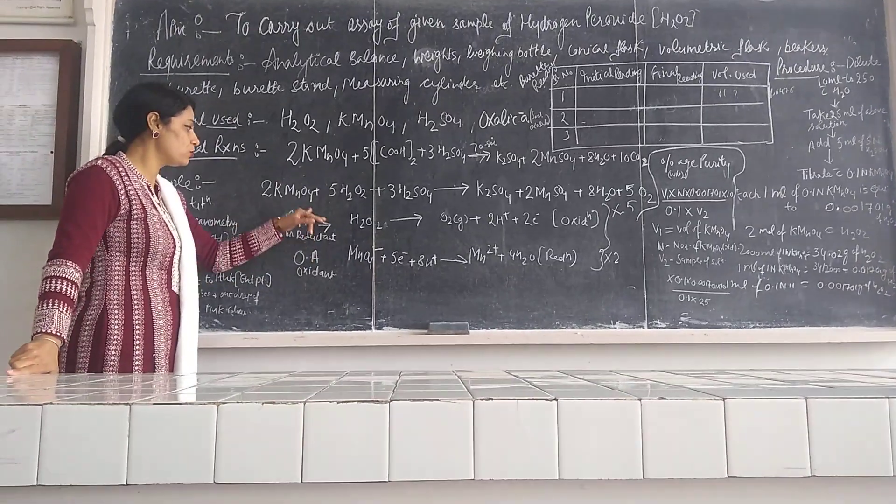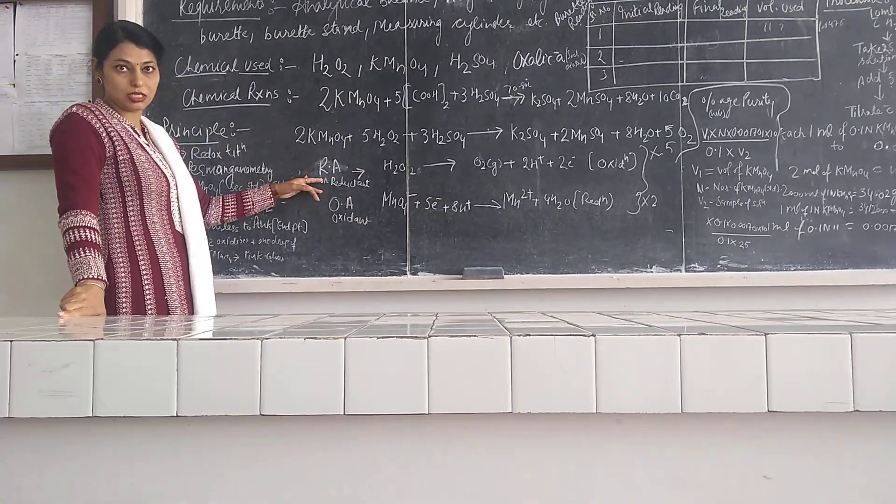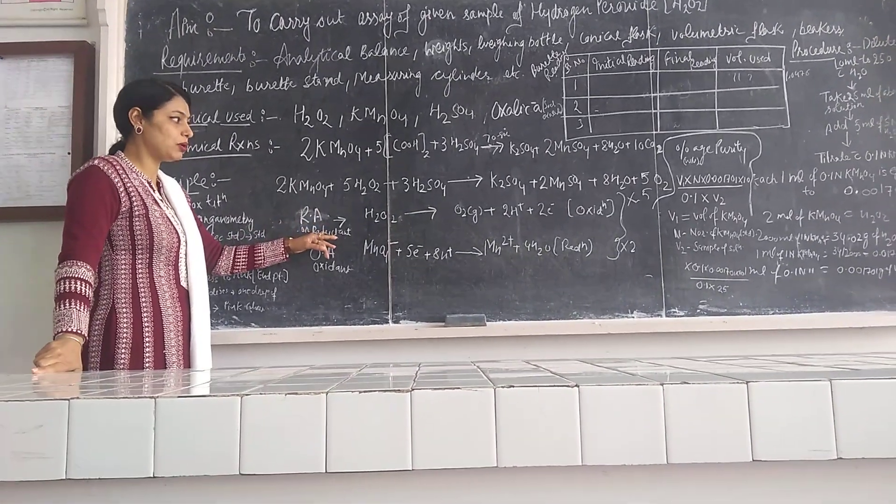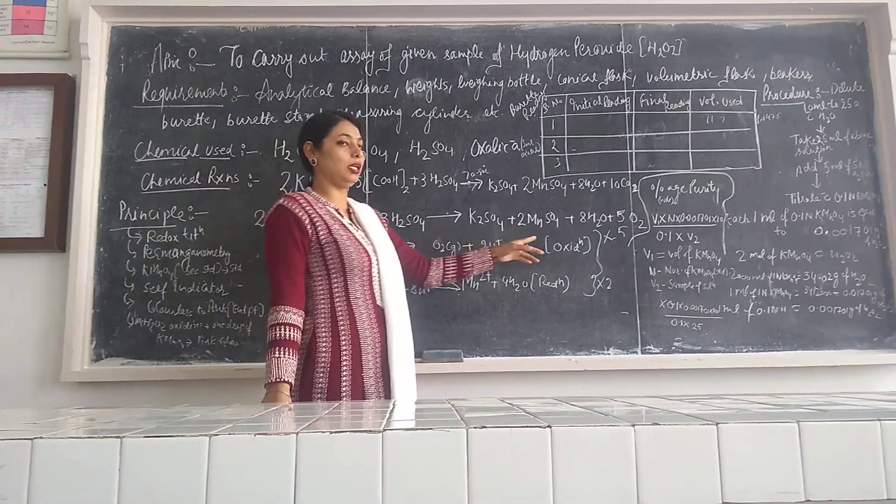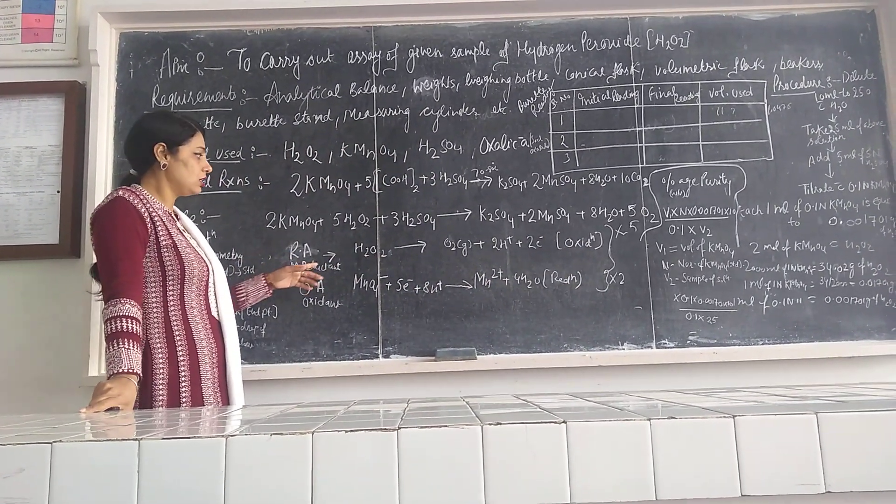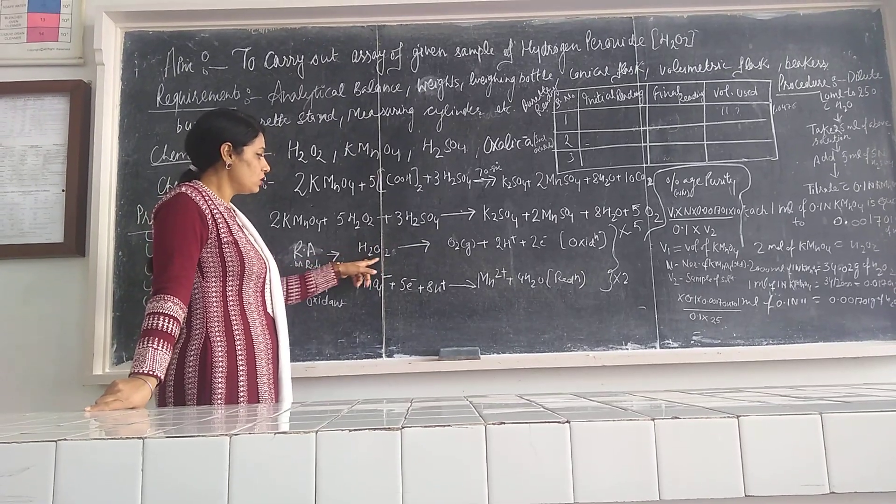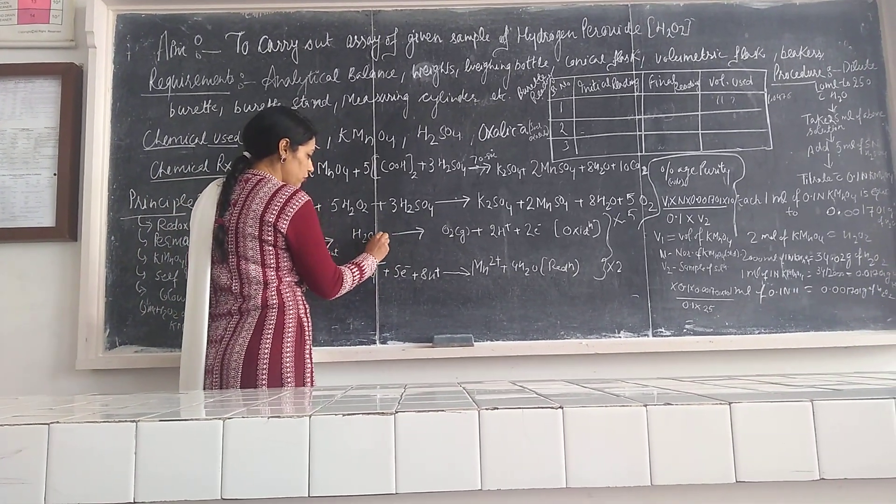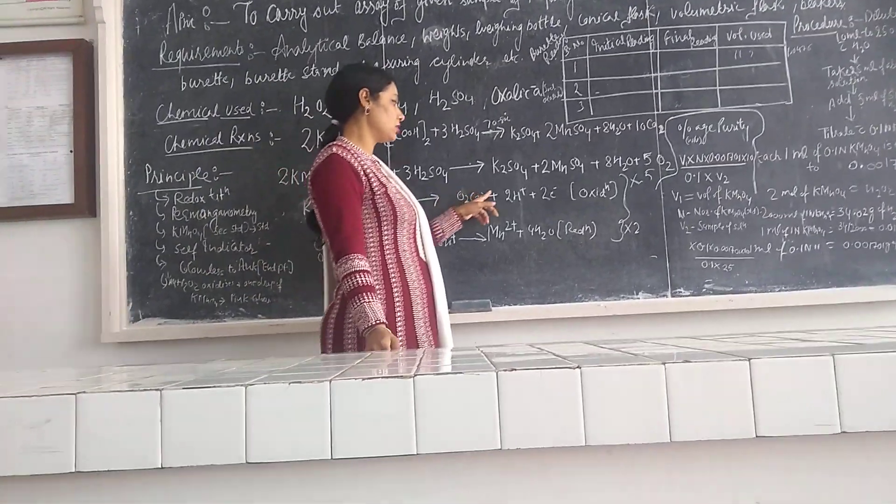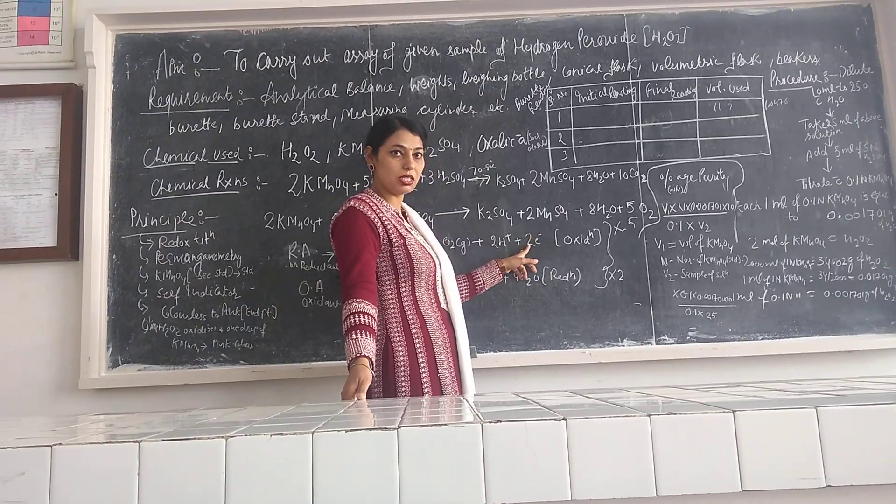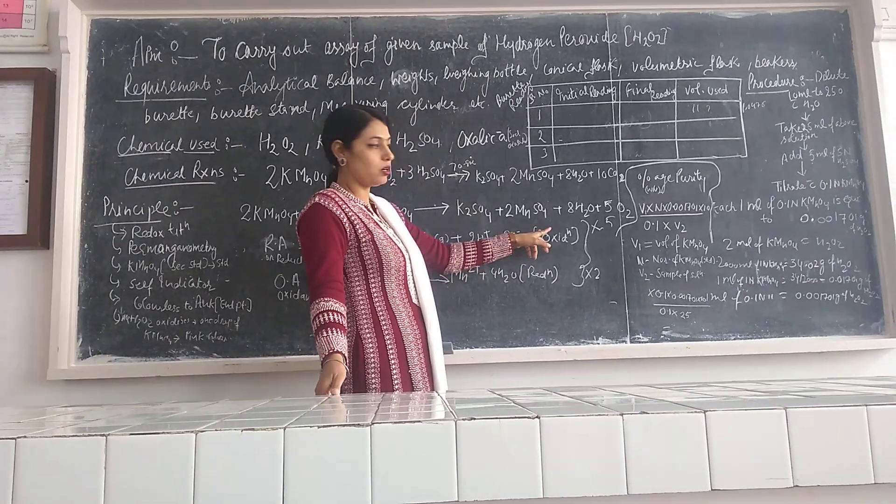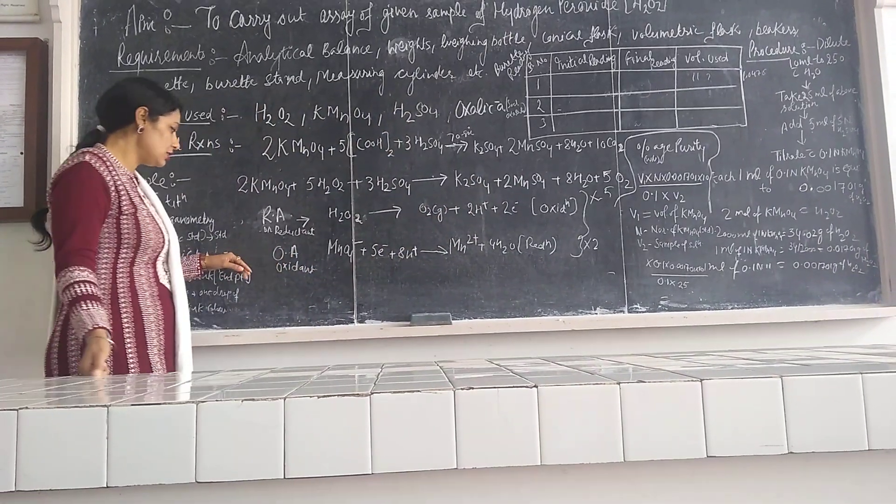So this is your reducing agent. Reducing agent undergoes oxidation. Oxidation means there is a loss of electrons. See, H2O2 is the formula for hydrogen peroxide. It will give O2 plus 2H+ ions plus 2 electrons. See, there is a removal of electrons. So oxidation is happening.